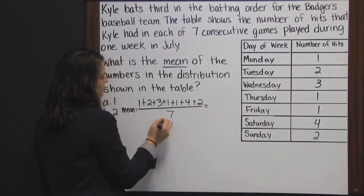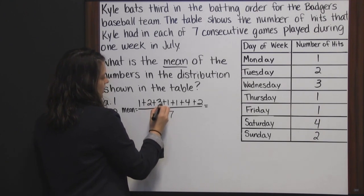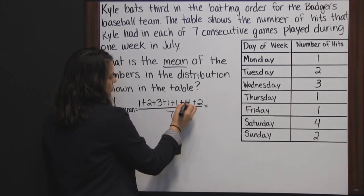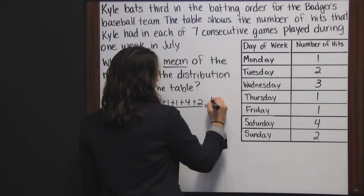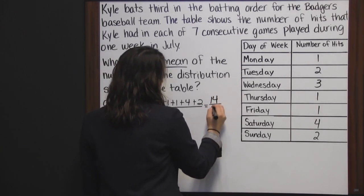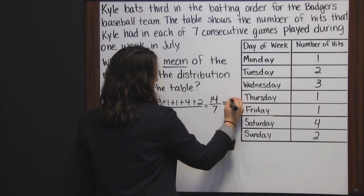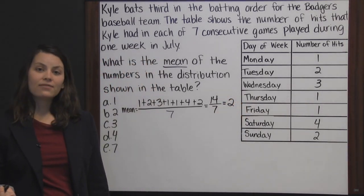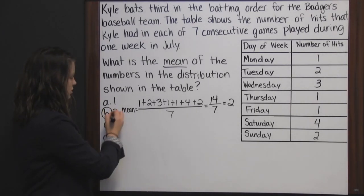So 1 plus 2 is 3, plus 3 is 6, plus 1 is 7, plus 1 is 8, plus 4 is 12, plus 2 is 14. So 14 divided by 7. And 14 divided by 7 is 2. Therefore, the mean or the average of these numbers is 2.